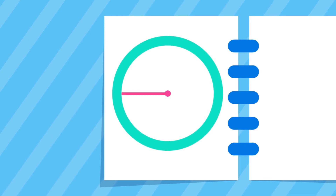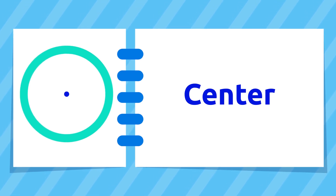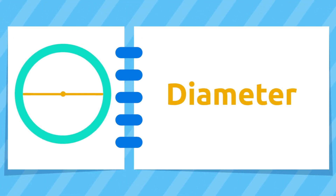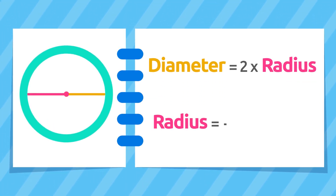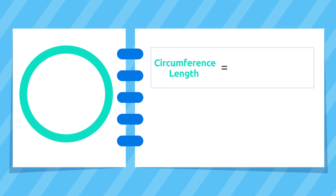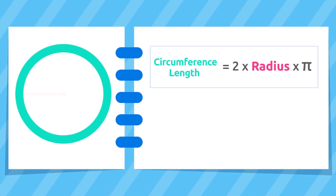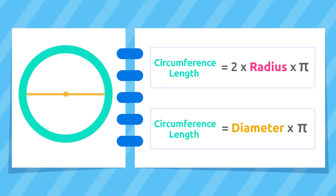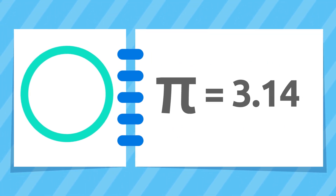Let's recap some elements of the circumference: the center, the radius, and the diameter. Remember that the diameter is twice the radius, or in other words, the radius is half the diameter. The length of the circumference equals twice the radius multiplied by pi, or in other words, the diameter of the circumference multiplied by pi. Remember that pi is 3.14 — we are always going to use this number.